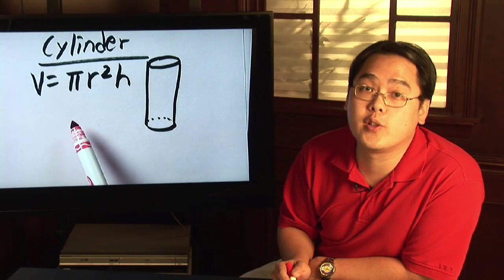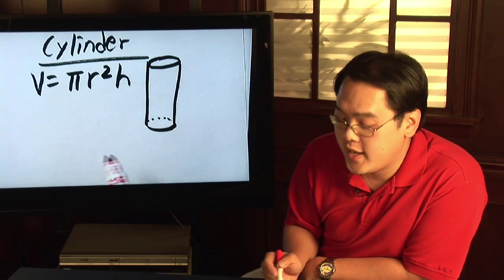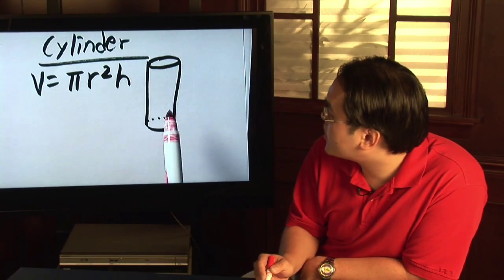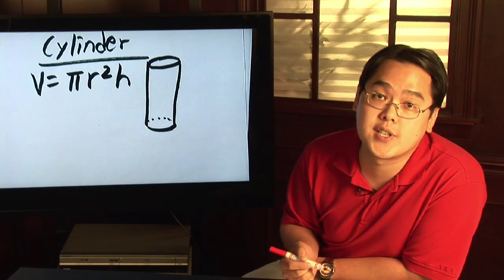Now the pi r squared looks familiar because it's the area of a circle, and when you think about it in a cylinder that makes sense because a cylinder actually has circular parts. The h refers to the height of the cylinder.